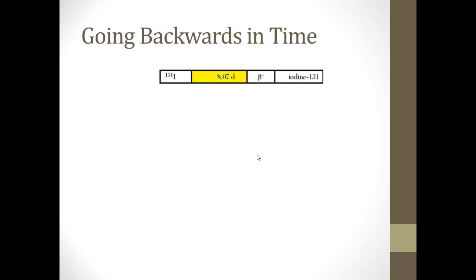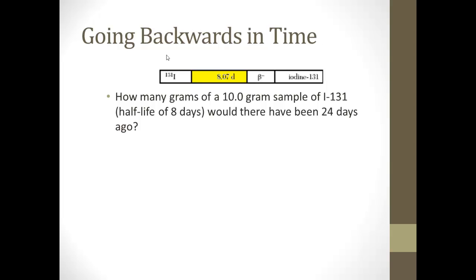Another kind we'll deal with is going backwards in time. So how many grams of a 10-gram sample of iodine-131, which has a half-life of 8 days, would there have been 24 days ago? Once again, the number of half-lives is the total time divided by the half-life time. So it's, again, 24 divided by 8, so there's 3 half-lives.